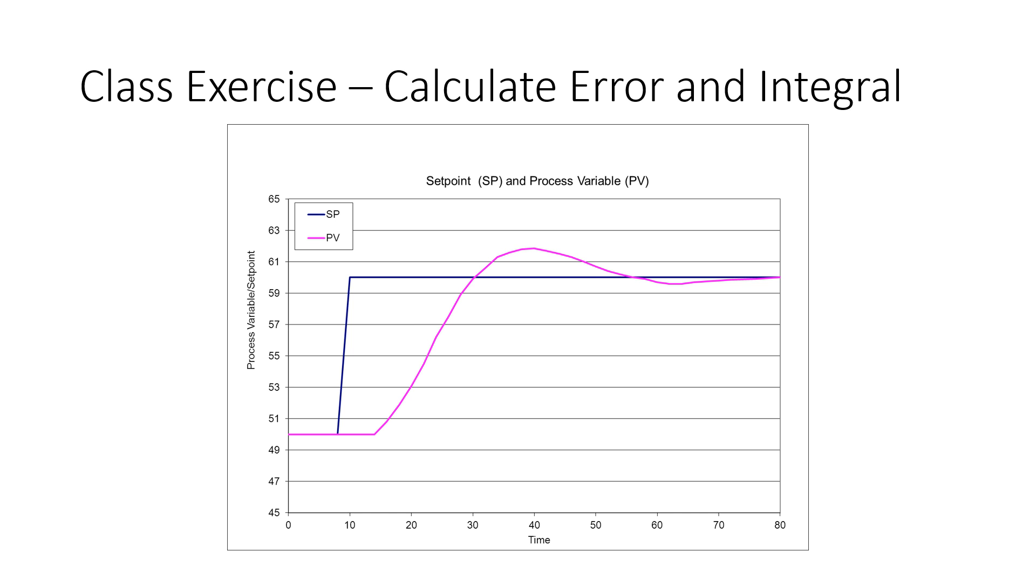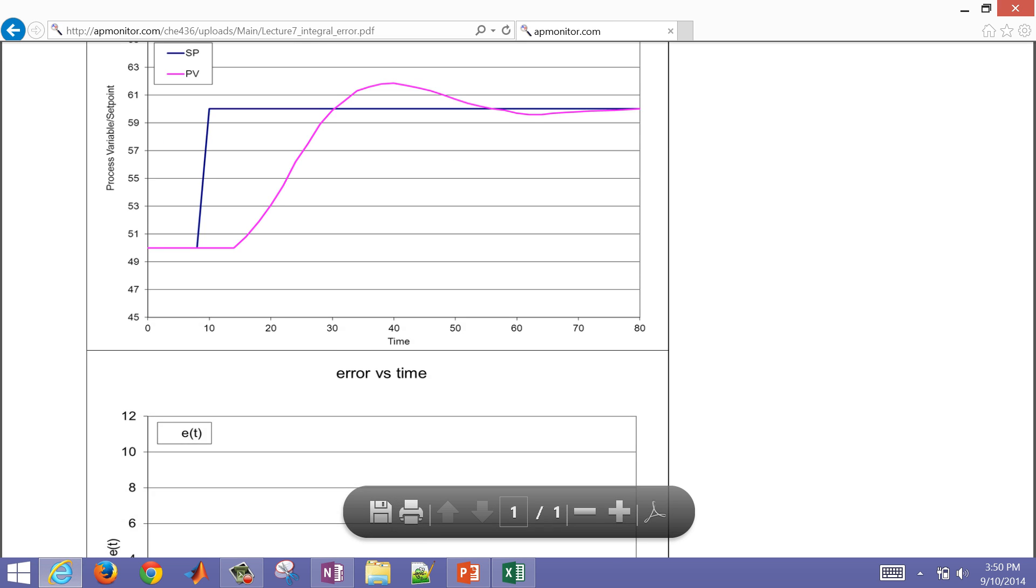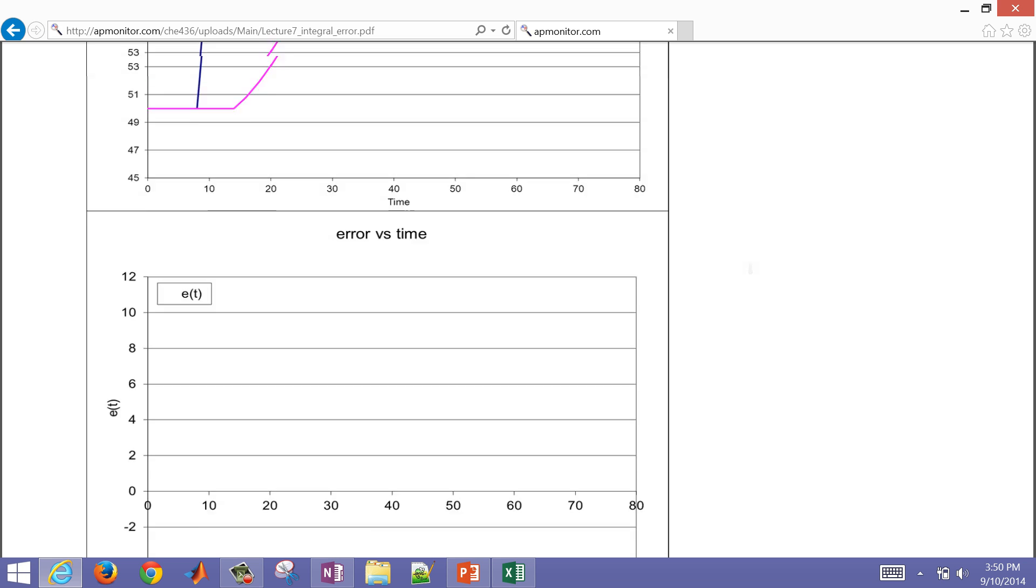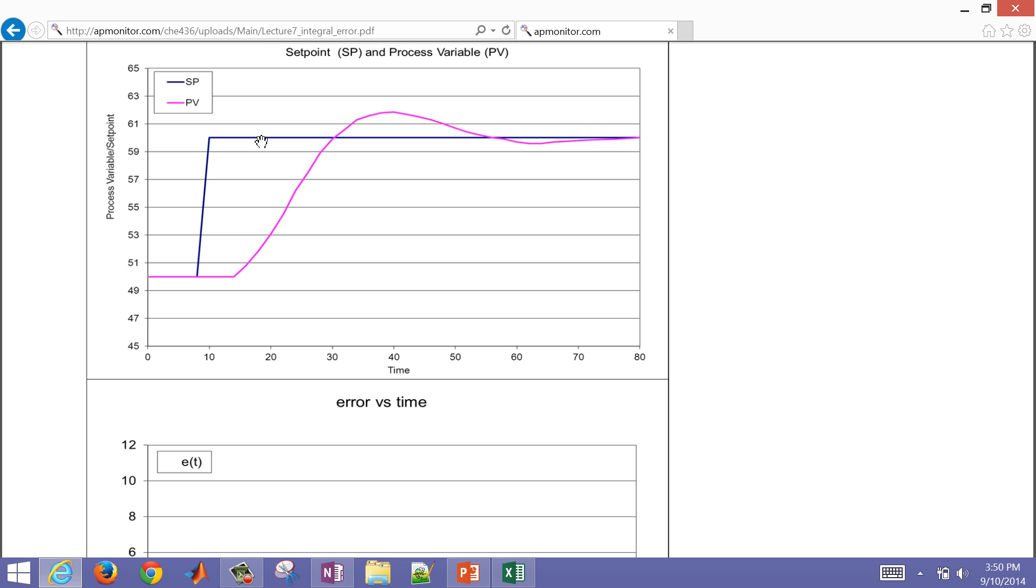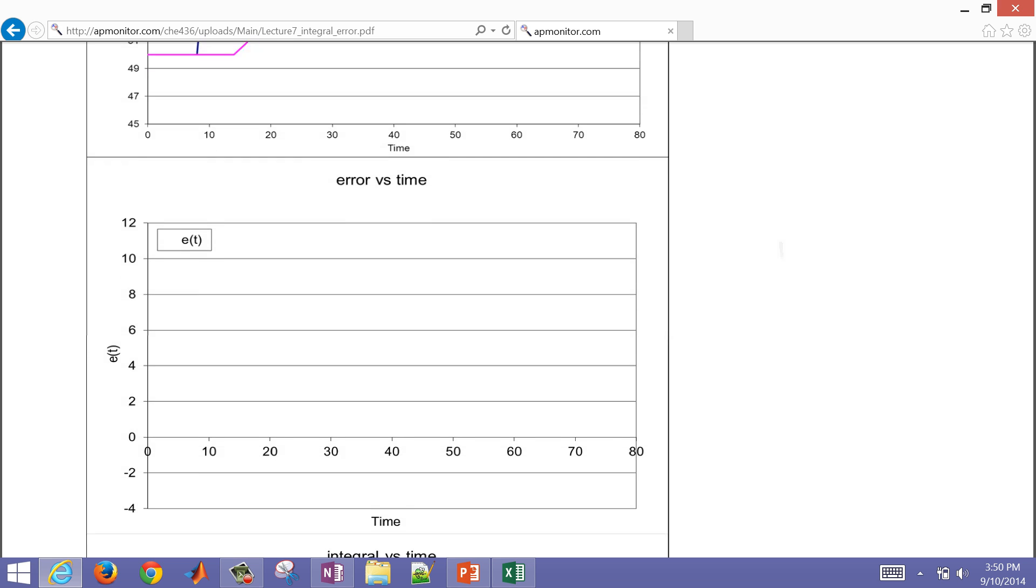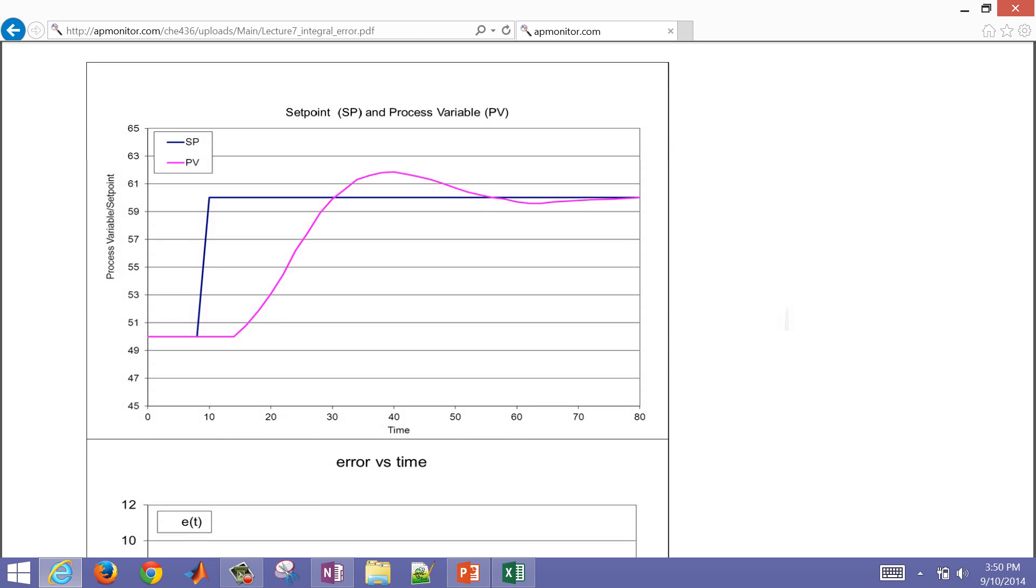Let's go ahead and go to this exercise now. You can also find this exercise if you go to the course website. If you go to the integral error worksheet, you can pull this up. What we want to do is try to calculate the error versus time. We have the set point and the process variable, and we can pick out select points along this and be able to plot the error versus time and the integral versus time.